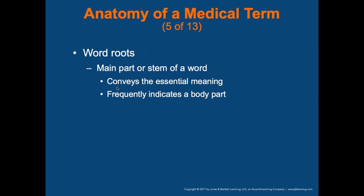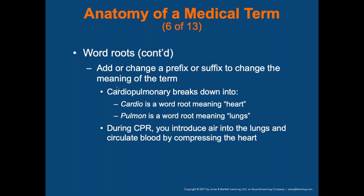Root words are the main part or stem of a word, conveying the essential meaning and frequently indicating a body part. If we add or change a prefix or suffix, we change the meaning. For example, 'cardiopulmonary' breaks down into 'cardio' — the root word for heart — and 'pulmon,' the root word for lungs.